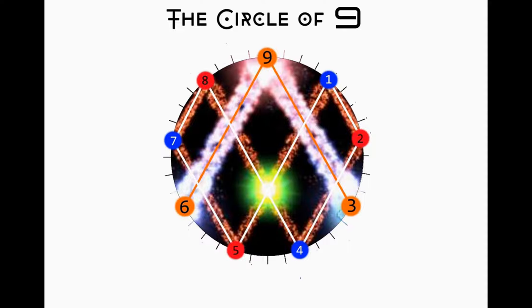These three numbers don't directly take part in the calculations. Instead, they are the controllers. Nine being the source of energy, three being the male component of the energy and six being the female component of the energy.